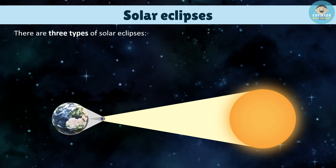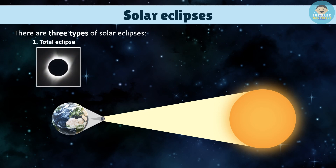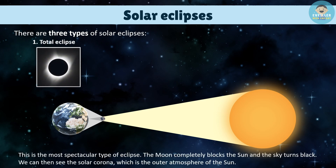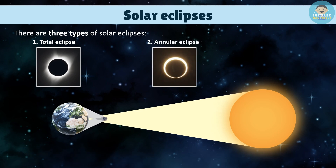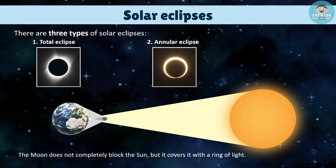There are three types of solar eclipses. Total Eclipse: this is the most spectacular type of eclipse. The Moon completely blocks the Sun and the sky turns black. We can then see the solar corona, which is the outer atmosphere of the Sun. Annular Eclipse: the Moon does not completely block the Sun, but it covers it with a ring of light.